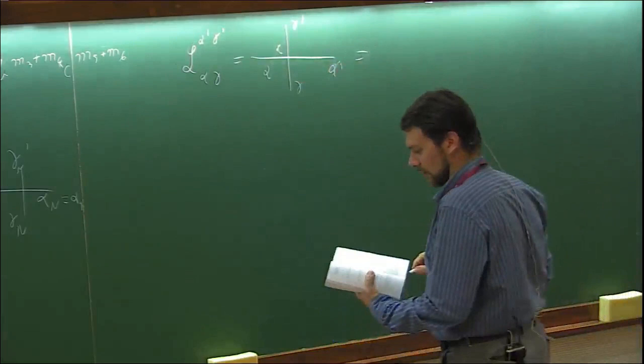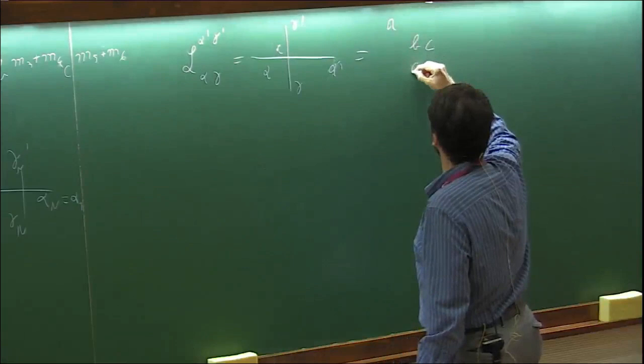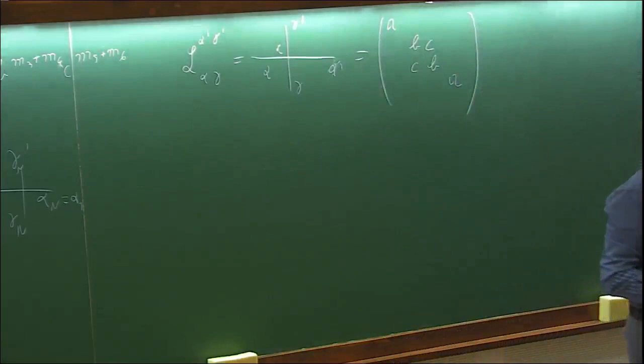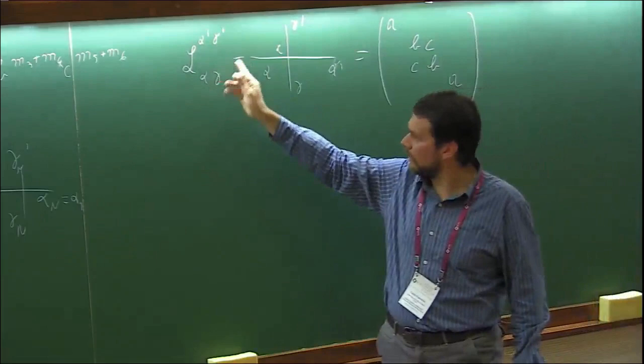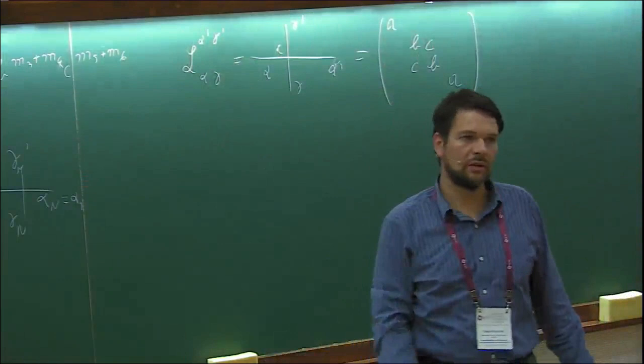This L operator can be written as a matrix in a natural basis: a, b, c, c, b, a, with all other elements being zero. Depending on the value of these indices, you have these weights, which give you the six admissible vertices in your system.